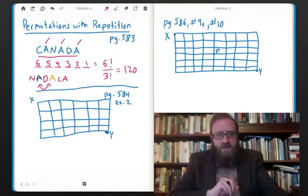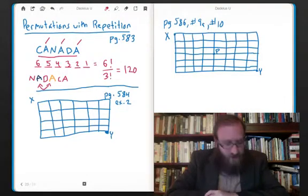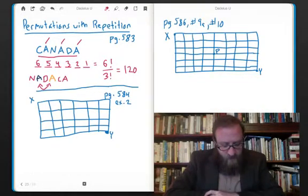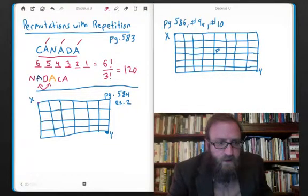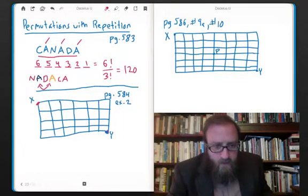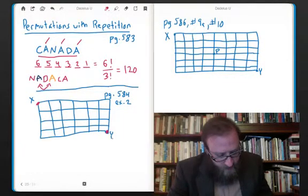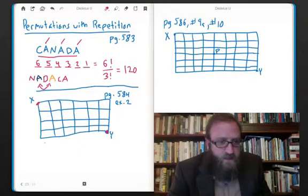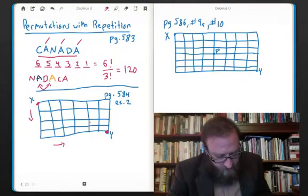Look at the example they gave us on page 584. That's example two. The grid shown at the right represents the streets of a city. A person at point X, here's our point X, a little point, is going to walk to point Y. They're going to make it simplified for us by always traveling south or east. So we do have to either go south or east in this question. There's no going north, no going west. How many routes from X to Y are possible?